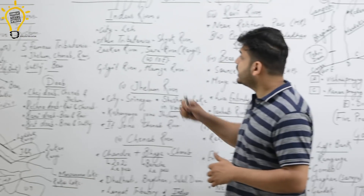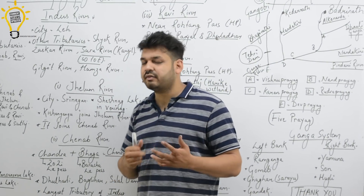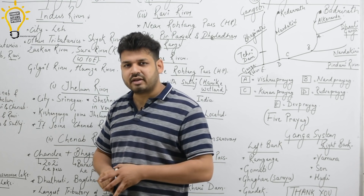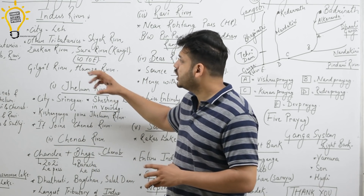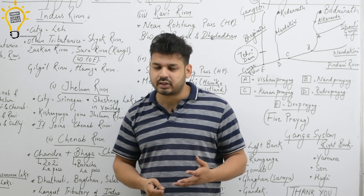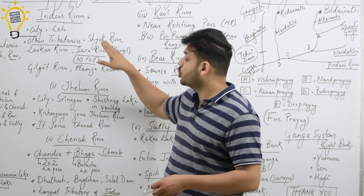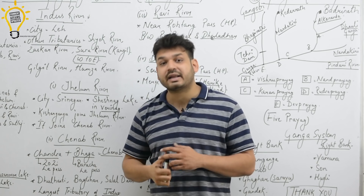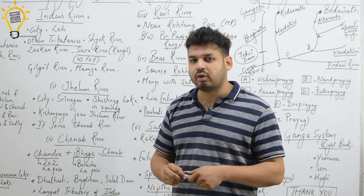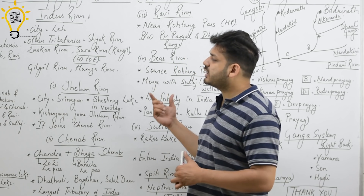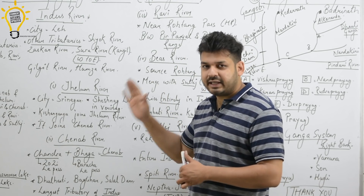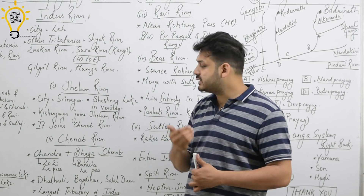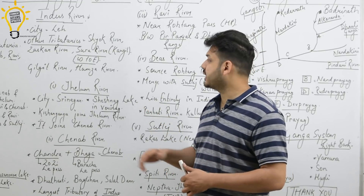The city of Leh in Jammu and Kashmir is situated on the bank of the Indus River — this is an important fact. Other tributaries of the Indus include: Shok River, Zanskar River, Suru River — Suru River is important because Kargil is situated on this river. There are also Gilgit River and Hunza River as tributaries of the Indus.